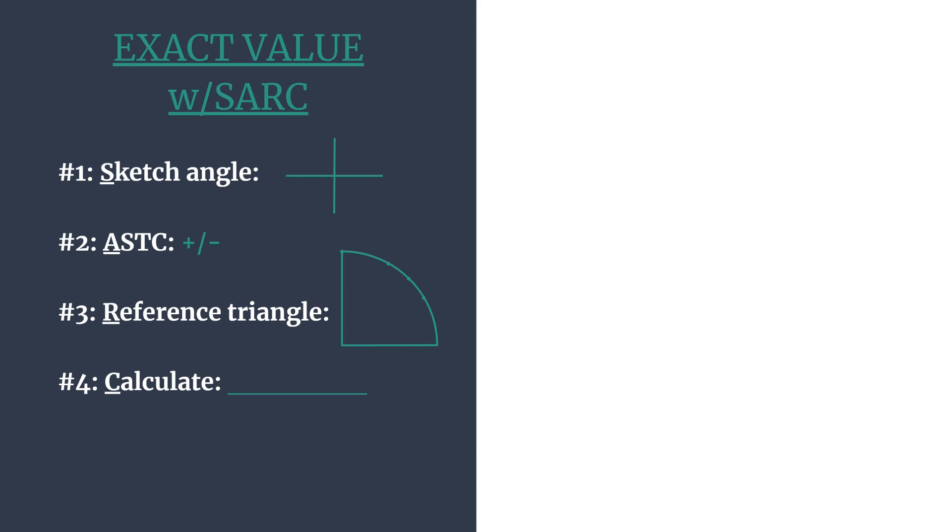First, S, we sketch the angle's terminal side. A, we use ASTC to decide if the final answer should be positive or negative. R, third we're going to find the reference angle and then the special right triangle and coordinates that correspond with that. And then C, calculate. Our final step will be to find our trig ratio and simplify.